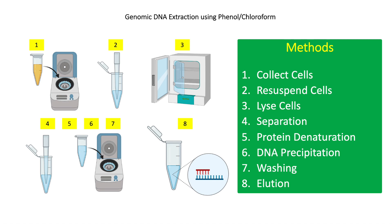For step six, add one-tenth volume of 3 molar sodium acetate, then add two volumes of 100% ethanol. DNA will start to precipitate immediately after mixing. Incubate at negative 70 degrees Celsius for one day to further enhance precipitation. After incubation, centrifuge at 13,000 RPM for 30 minutes at 4 degrees Celsius, then discard the supernatant.